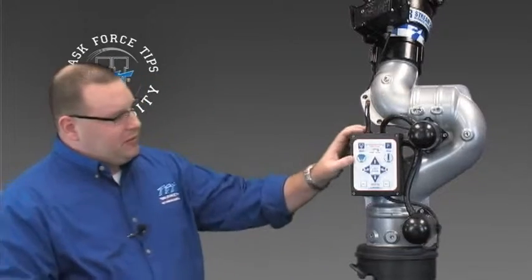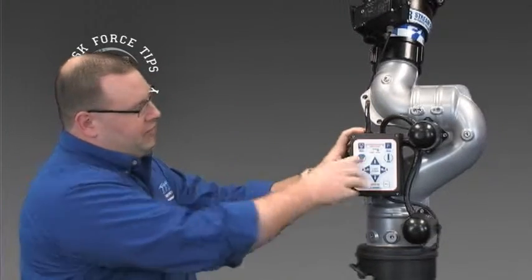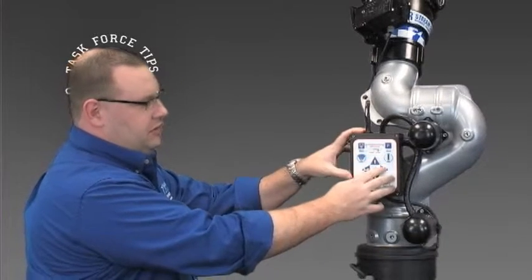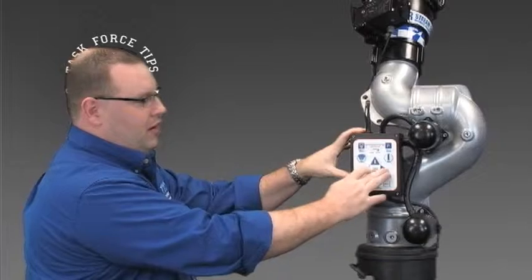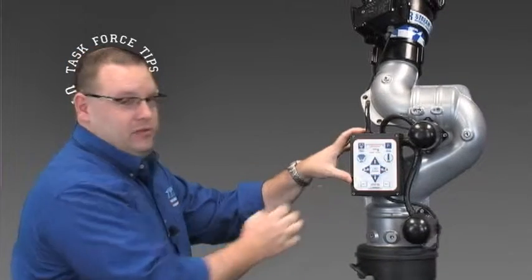Today we're going to discuss troubleshooting a TFT RC monitor motor board. Basically what we're going to try and fix here is if your monitor's straight stream and fog work just fine, the vertical axis works just fine, but you have no motion from one of the axes—whether it be up and down, left and right, or the nozzle boards.